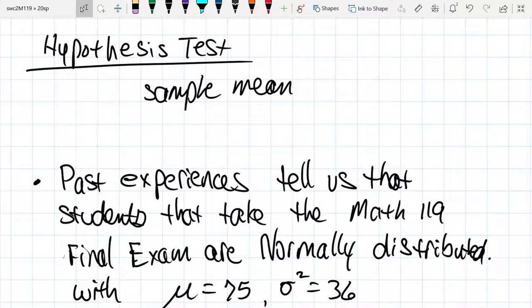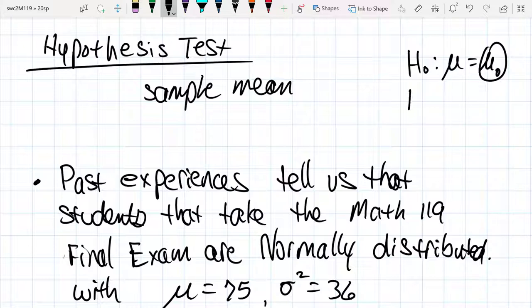All right, let's do an example with a hypothesis test involving a null hypothesis for the mean and an alternative hypothesis that we're going to test against, and then we're going to do a two-tailed test.